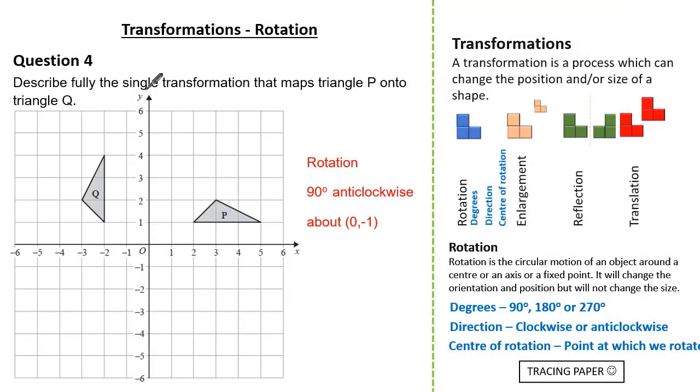So we know the single transformation is rotation, the angle is 90 degrees and the direction is anticlockwise. And the centre of enlargement is (0, -1). An alternative answer would be rotation as our single transformation 270 degrees clockwise with our centre of enlargement of (0, -1).